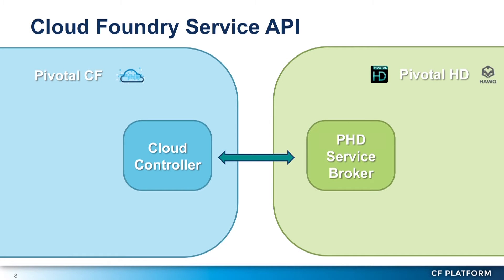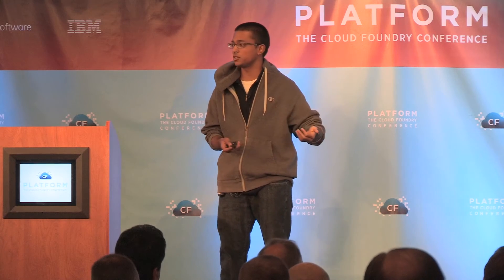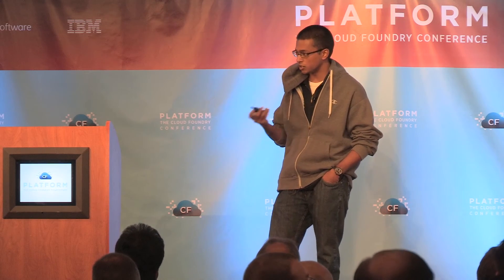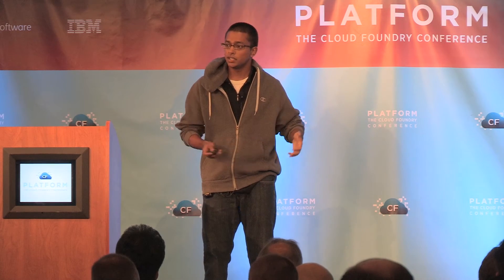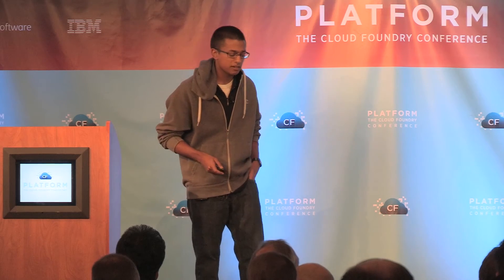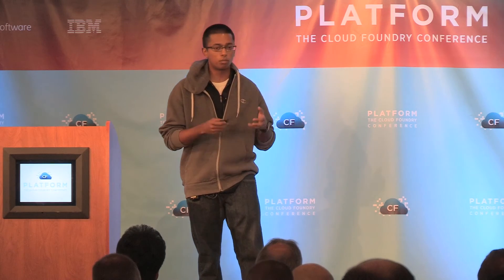At the core of this extensibility is a communication that occurs between the Cloud Controller in Cloud Foundry and the service broker responsible for negotiating on behalf of the external service. This communication handles catalog management, provisioning, and binding. Catalog management is the service broker telling the Cloud Controller what service it's providing to application developers. Provisioning is setting aside resources so apps can consume the service. Binding gives applications the authorization and credentials they need to actually use those resources.